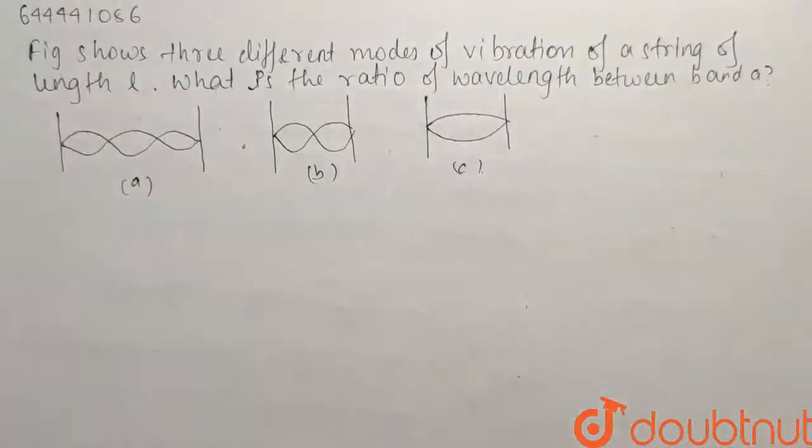So here we have a question from the chapter waves. Figure shows three different modes of vibration of a string of length L. What is the ratio of wavelength between B and A?